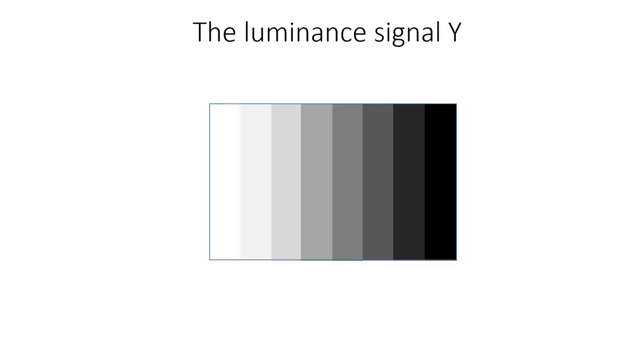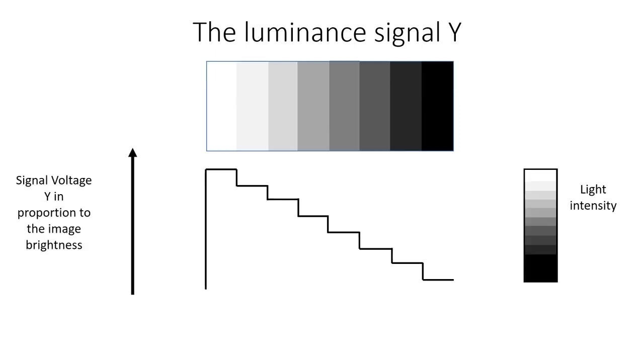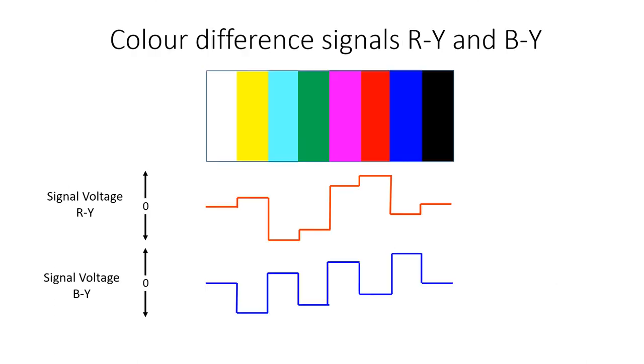The luminance signal Y is a set of grayscale bars from white to black. This diagram shows what the luminance video signal looks like as the electron beam scans across the image sensors for one line. Dark portions of the image are a lower voltage than bright portions. The luminance signal is the same as the video signal in the black and white system and contains the detailed information in the picture. This diagram shows the color difference signals R-Y and B-Y.